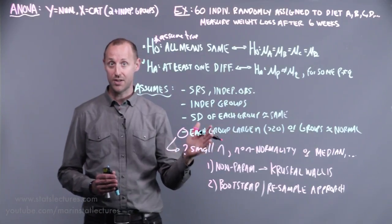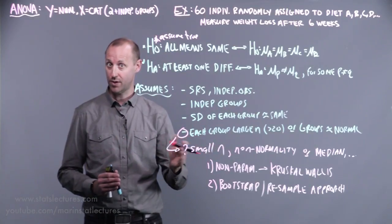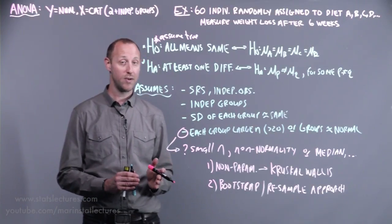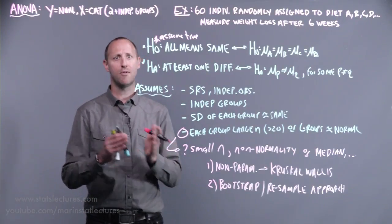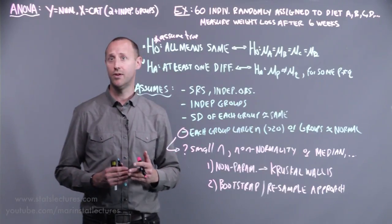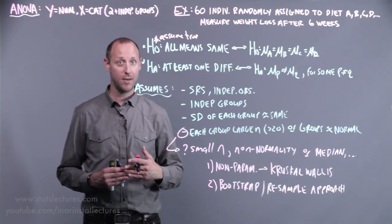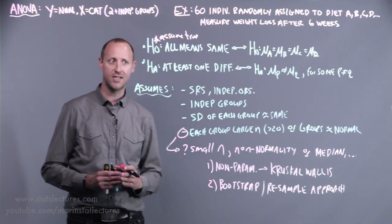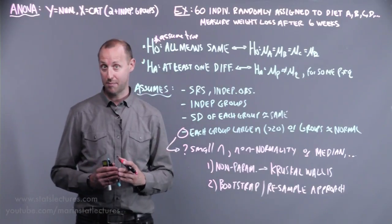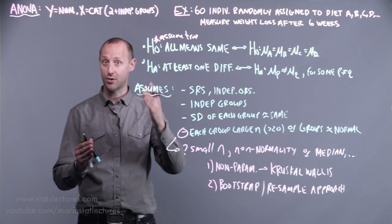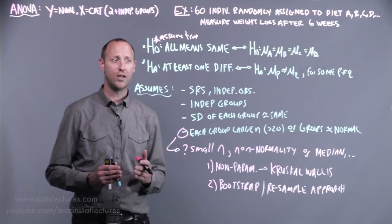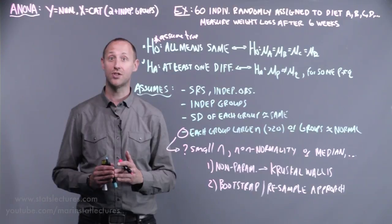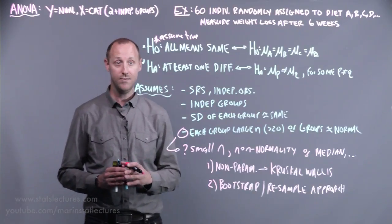We can randomize who gets each of the four diets, but we might want to make sure other factors are balanced. We might want to make sure that we have a certain number of males or females in certain groups, or a certain number of heavier or lighter people, or people who are more active or less active. Randomizing, we hope, should balance these, but we can do things like match. For someone in group A, we can find a match in group B, C, or D.